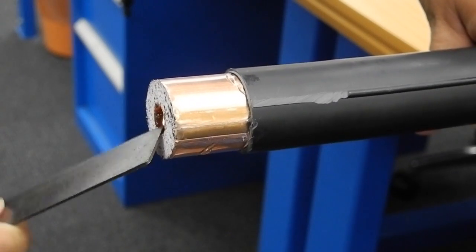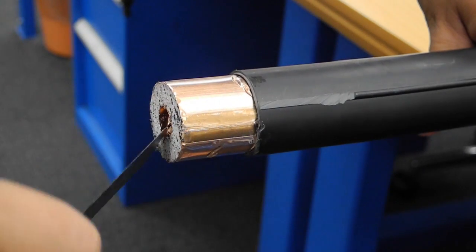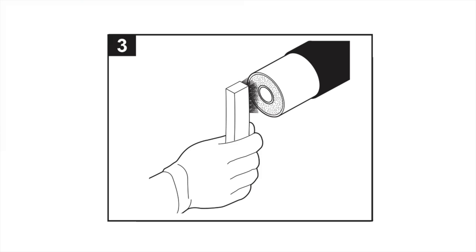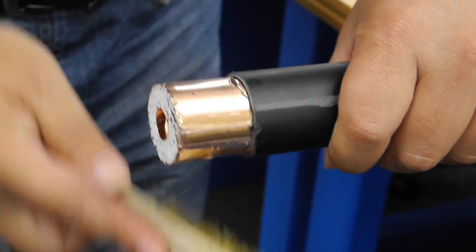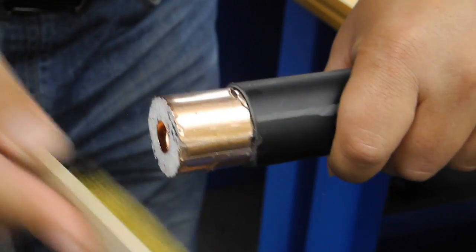Use a knife to deburr the face of the inner conductor. With a wire brush, clean all exposed faces and surfaces and remove any unwanted material.